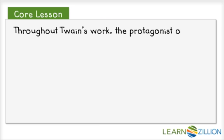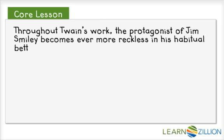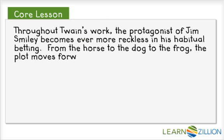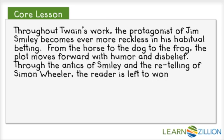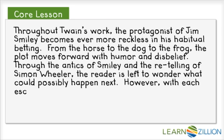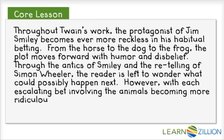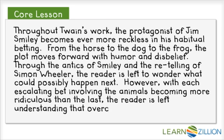Throughout Twain's work, the protagonist Jim Smiley becomes ever more reckless in his habitual betting. From the horse to the dog to the frog, the plot moves forward with humor and disbelief. Through the antics of Smiley and the retelling of Simon Wheeler, the reader is left to wonder what could possibly happen next. However, with each escalating bet involving the animals becoming more ridiculous than the last, the reader is left understanding that overconfidence, like Smiley's, will eventually lead to trouble.